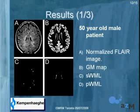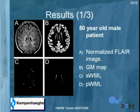Here is an example of the results. On the left you can see the FLAIR image with some bright spots. On the right is the gray matter map obtained from SPM2. Panel C shows the voxels assigned to subcortical white matter lesions, and on the right are the periventricular white matter lesions. There is a bright spot which might appear to be a white matter lesion, but it is located within the gray matter, so the technique correctly did not classify it as a white matter lesion.